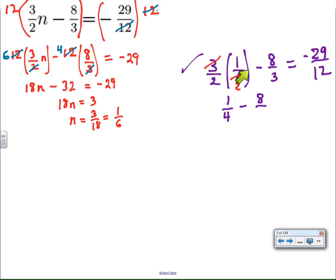So, here, when I put in 1/6 in parentheses where the x used to be, I reduce the fractions. 3 goes into 6 twice. We get 1/4. And then we have minus 8/3 equals negative 29/12.